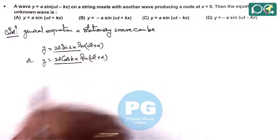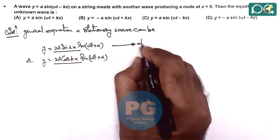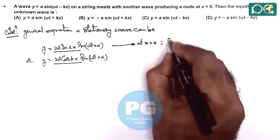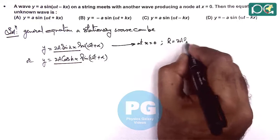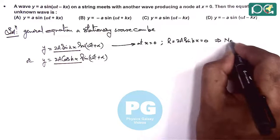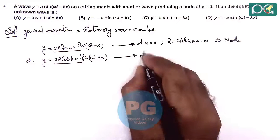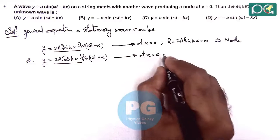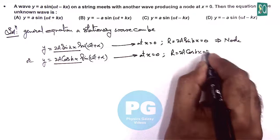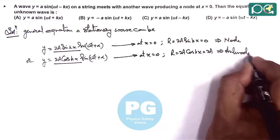Here the resulting amplitude is 2a·sin(kx) in the first case, and 2a·cos(kx) in the second case. At x = 0, we can see that 2a·sin(kx) becomes zero, which corresponds to a node. When the amplitude is 2a·cos(kx), at x = 0 we get r = 2a, which corresponds to an antinode.